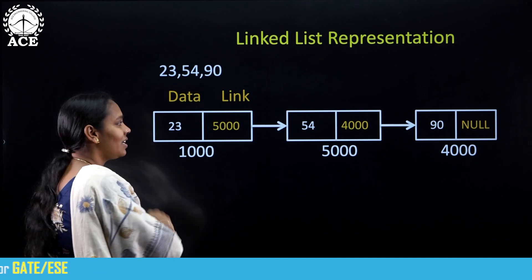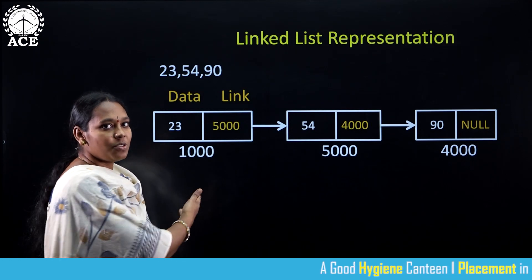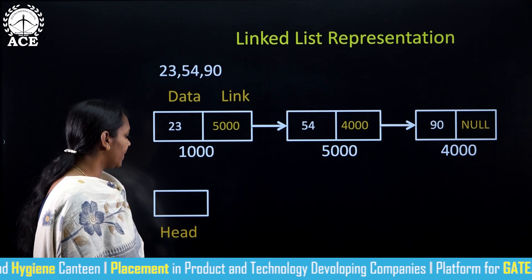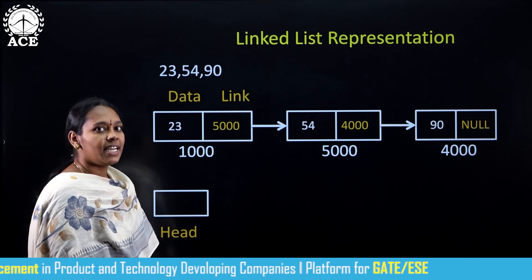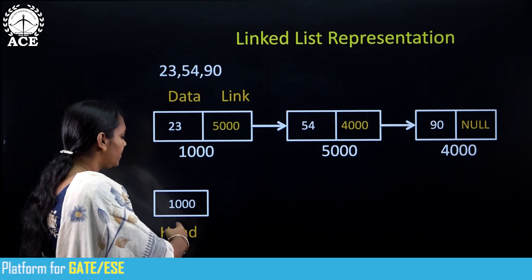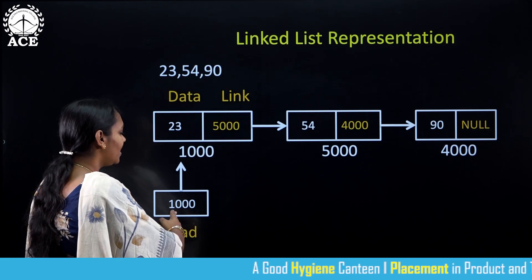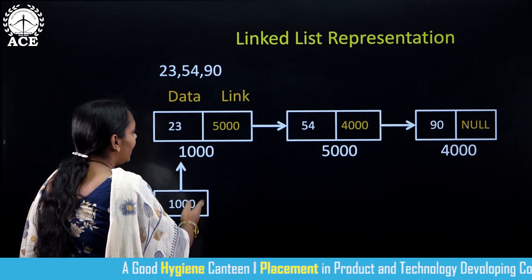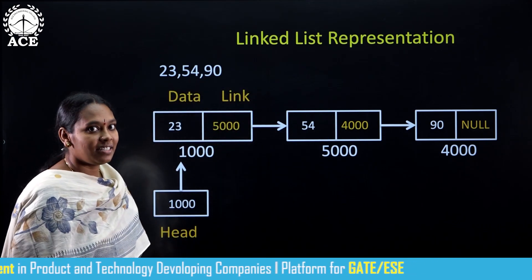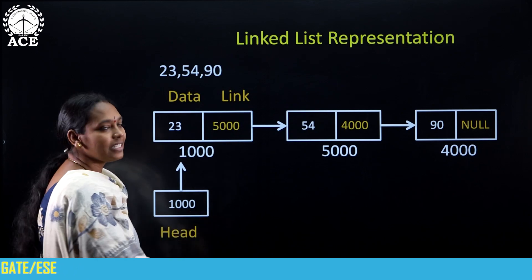Now the question is, how to reach the first node? If you have the first node address, we can easily reach it. But where do we store this first node address? For this purpose, we need one pointer — that is the head pointer. I am storing the first node address in the head pointer and giving a link to the first node. Now I can easily reach the first node. From the first node I can reach the second node, and from the second node I can reach the third node. With the link part, we can connect two nodes. This is how the linked list can be represented.